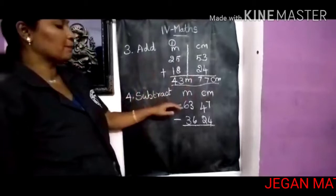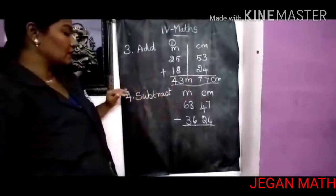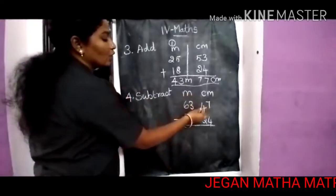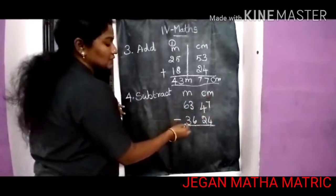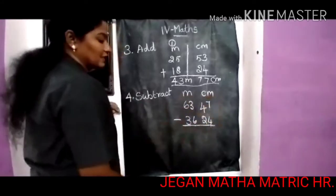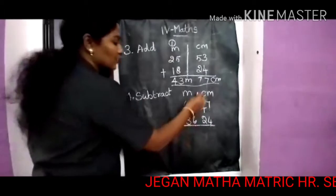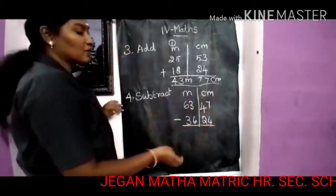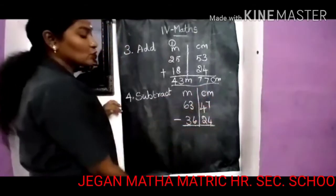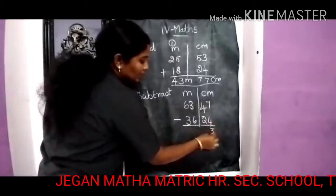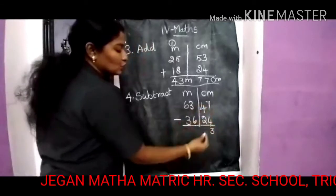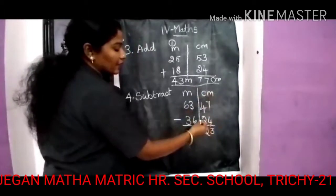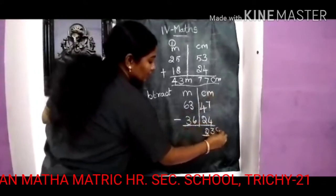Now Roman numeral 4: subtraction. The problem is 63 meter 47 centimeter minus 36 meter 24 centimeter. Same thing — first write the meter side and centimeter side separately. Start subtraction from the centimeter side: 7 minus 4 is 3, and 4 minus 2 is 2, so the centimeter side gives 23 centimeter. So 47 centimeter minus 24 centimeter is 23 centimeter.